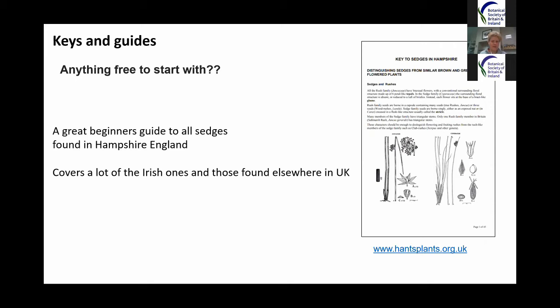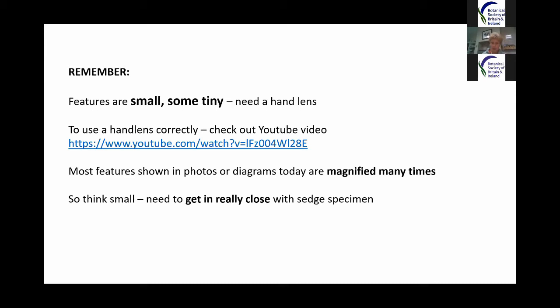Just before we start into the details: just like grasses, features are small — sometimes really tiny — so you do need a hand lens. There's a video link for how to use a hand lens correctly. The features in this presentation are magnified many times, so beginners should be aware just how tiny these things are in real life. You need to get really, really close to the sedge and its parts to identify them.